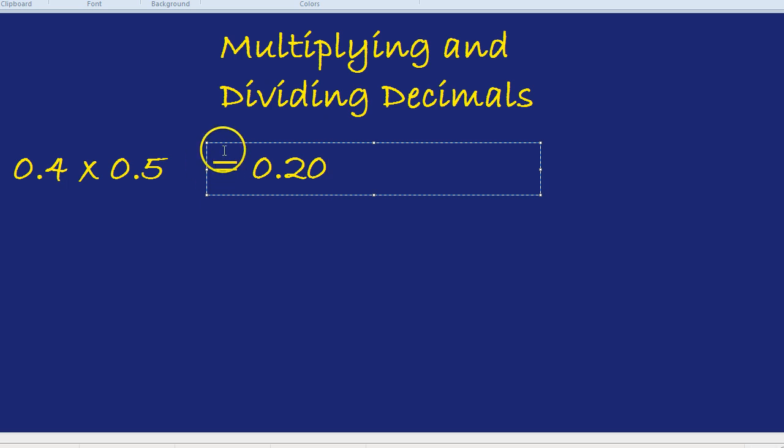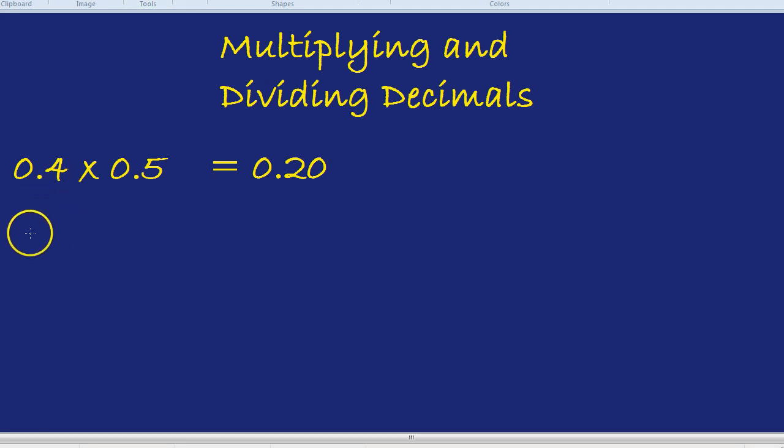That only works when you have like 0.0 and then a number. However, when the question gets harder, for example, 0.004 or something, then you might want to try this method. What you do is you convert both of the decimals into a fraction. So 0.4, if you convert it as something over 10 or something over 100 or 1,000, that is the easiest way of doing it.